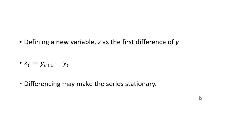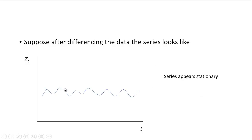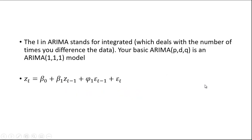Z_T is going to be equal to Y_{T+1} minus Y_T, and when you do that this may make the series stationary, and then you can apply the ARMA models. After differencing, you might get data that looks something like this — appearing stationary with roughly constant variance and constant mean.